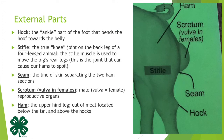Moving to the rear of our swine — the hock is the ankle part of the foot that bends the hoof towards the belly, and you definitely got up close and personal with the hock as you were curing your country ham. The stifle is the true knee joint on the back leg of a four-legged animal.